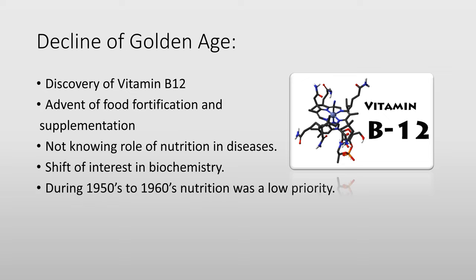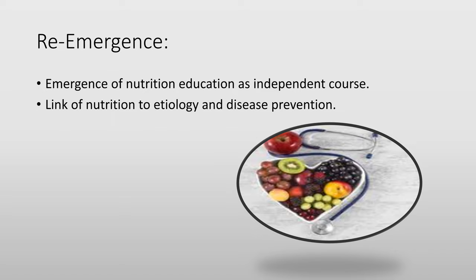During the 1950s to 1960s, nutrition was a low priority and again reduced in importance. Then came the reemergence of nutrition education as an independent course — which we are still struggling to establish. In Pakistan, there are only a few institutes offering the BS Human Nutrition and Dietetics course. We are still working on linking nutrition to etiology — meaning the cause of disease — and to disease prevention.